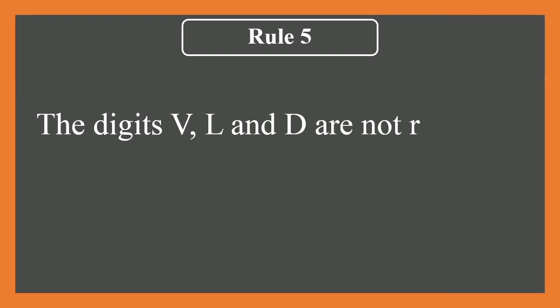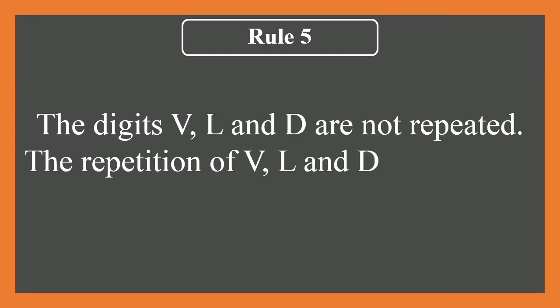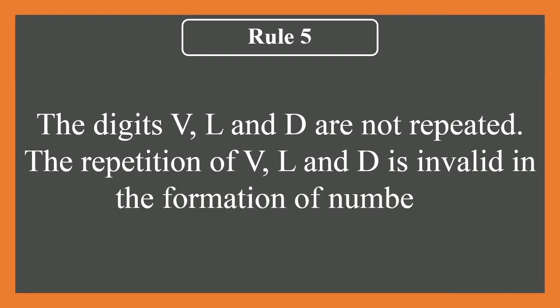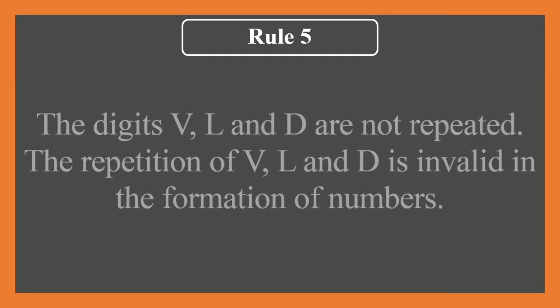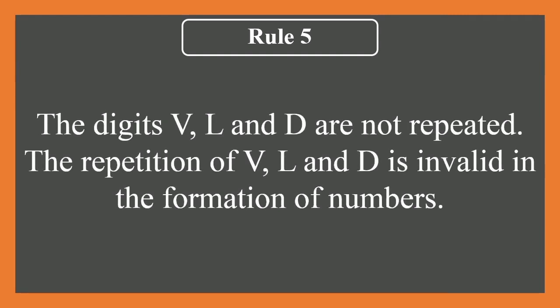Then what about the repetition of the other symbols, that is V, L, or D? What about the repetition of these symbols? See, the digits or the symbols like V, L, and D are not repeated, or the repetition of the digit or Roman symbol V, L, and D is invalid in the formation of Roman numerals. So you cannot say VV equals 10—for 10 there is a separate Roman numeral, that is X. LL you cannot say is 100—so 100 there is C. DD you cannot say 1000—that is M.